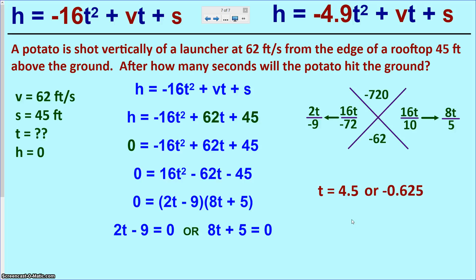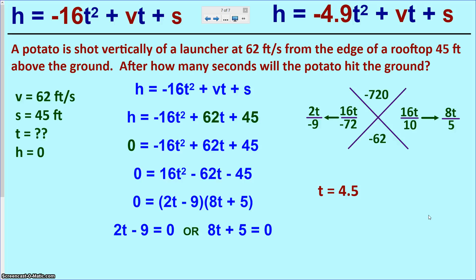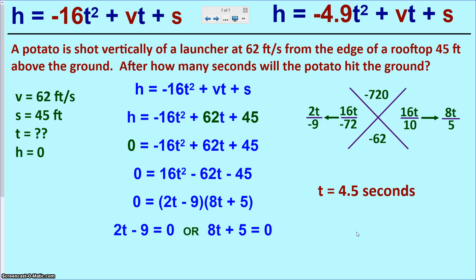We have two answers: 4.5 and negative 0.625. Just like yesterday, one answer doesn't make sense — negative time is never valid, so we discard negative 0.625. The answer is 4.5 seconds. Make sure to label your answer in seconds. That's the toughest sort of problem we have to deal with, so goodbye and I'll see you tomorrow.